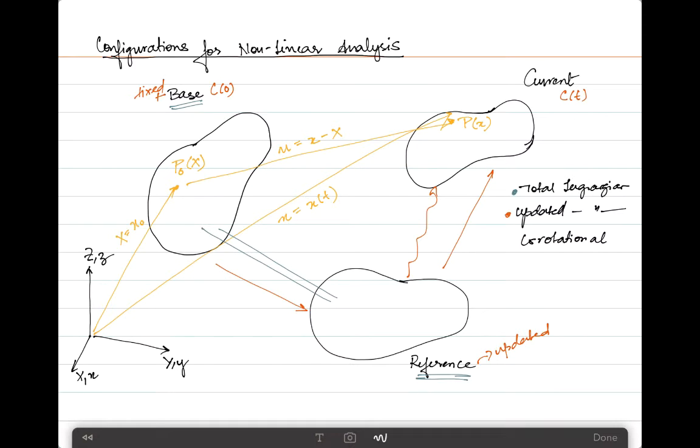The final one is the co-rotational formulation. This ensures that a local coordinate system is attached to each element within the continuum. This coordinate system translates and rotates with the element as the deformation proceeds.